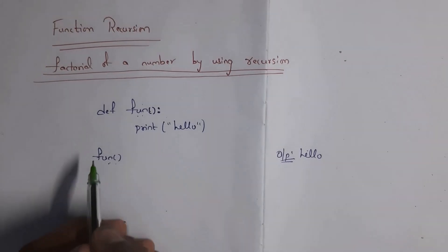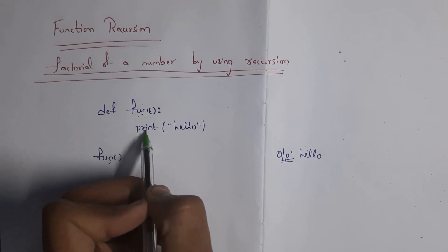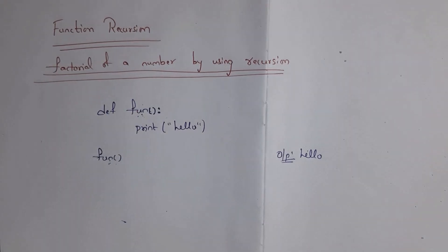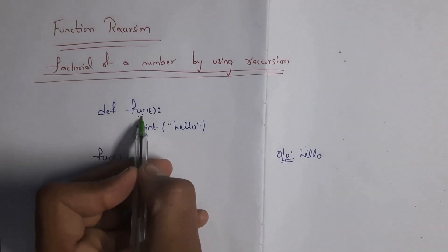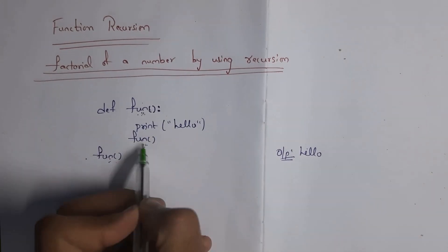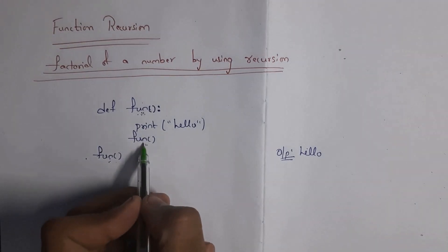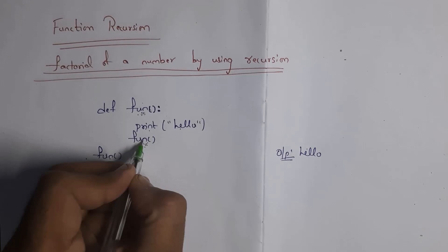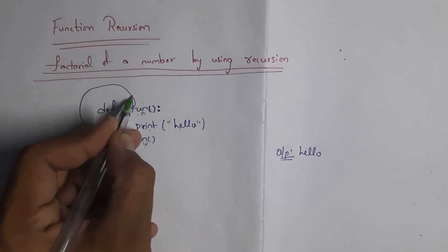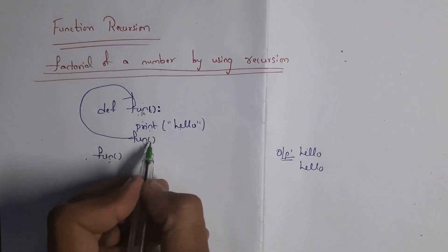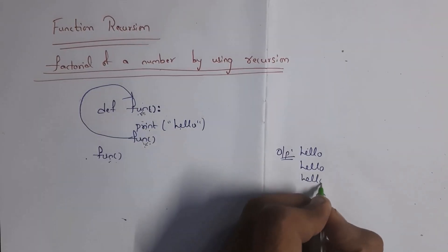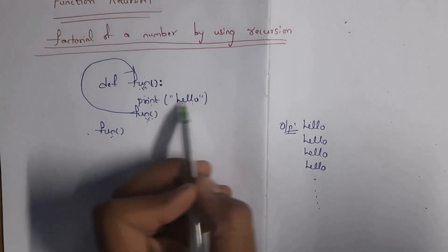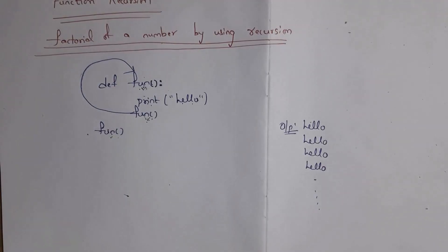Whenever you run this code it will search for this function, find it, and execute the print hello statement inside it. Now, a function that calls itself is known as recursion. So inside the function 'fun', I write 'fun' again — this function is calling itself. Whenever you run this code it will print hello, then call fun again, print hello again, and keep repeating. There is no end to this. By using recursion you can loop statements present inside the function — this is the use of recursion.